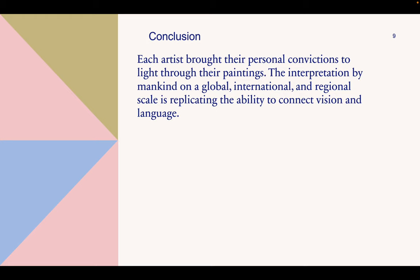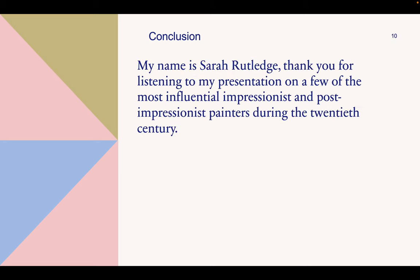Paul Cézanne helped lay the foundation for the transition from the 19th century to the 20th century and found new ways of representing nature. Vincent van Gogh had a really powerful influence on the development of modern painting, and he inspired and still inspires many people today to become artists. My name is Sarah Rutledge. Thank you for listening to my presentation on a few of the most influential Impressionist and Post-Impressionist painters. I hope you enjoyed it. And this is my Works Cited page.